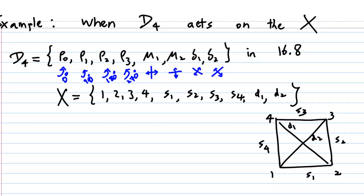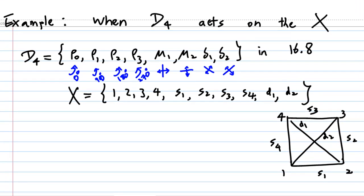Here is the example I'm going to use. Suppose D4 acts on the set X, where D4 is the symmetry group of the square, consisting of rotations of 0°, 90°, 180°, 270°, and reflections about the center of the square. Mu1 and mu2 are vertical and horizontal reflections. Delta1 and delta2 are two reflections in the diagonals. And X is taken from the square, consisting of vertices 1, 2, 3, 4; sides X1, X2, X3, X4; and two diagonals D1 and D2.